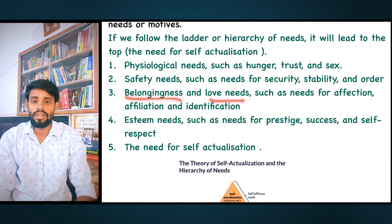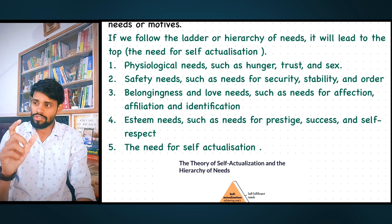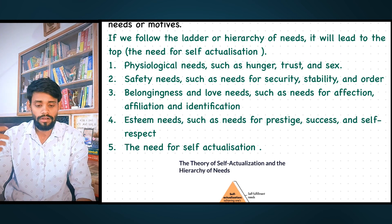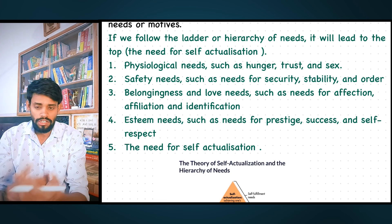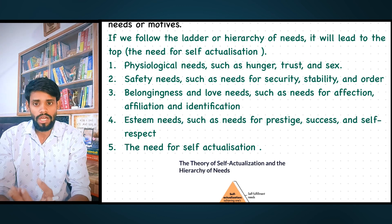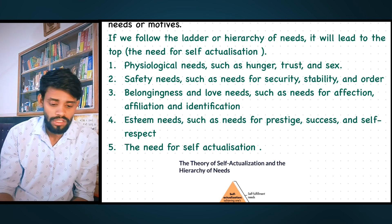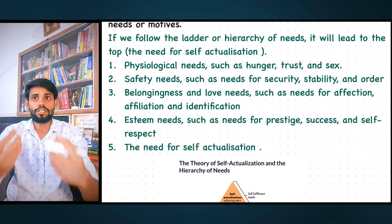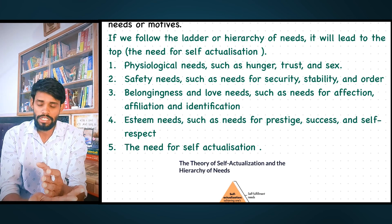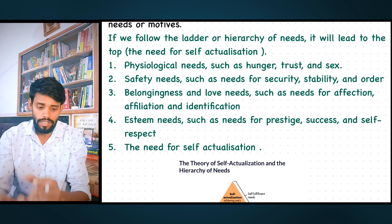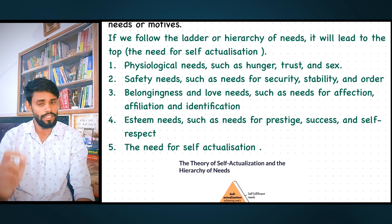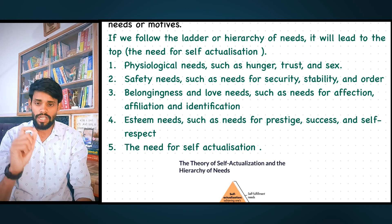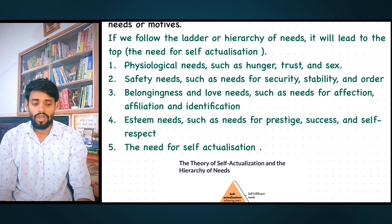Safety needs include security and stability — for example, stability means being able to get food daily. When the safety need is complete, the third step is belongingness and love needs. This is a simple transition: if one step is not complete, the next step becomes very difficult, because the ladder moves one step at a time.